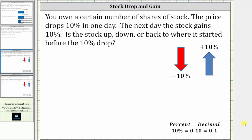You own a certain number of shares of stock. The price drops 10% in one day. The next day, the stock gains 10%. Is the stock up, down, or back to where it started before the 10% drop?